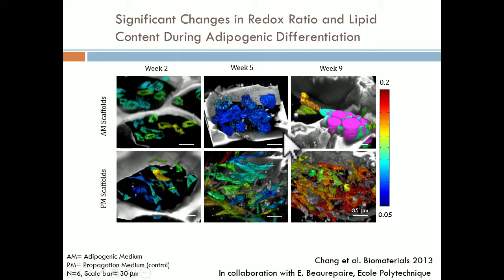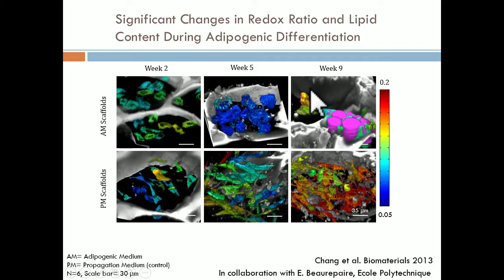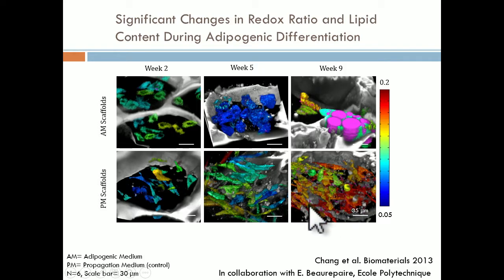We can also take redox images over time — for example, to characterize the metabolic state of stem cells exposed to adipogenic differentiation media, and see how dynamically some of them decide to become fat cells. Interestingly, cells right next to those fat cells are not doing much. These stem cells are exposed to propagation media, remaining and differentiating, but their metabolic state is definitely changing, demonstrating a beautiful heterogeneity.